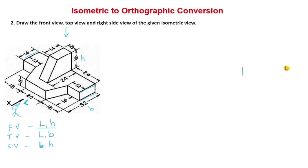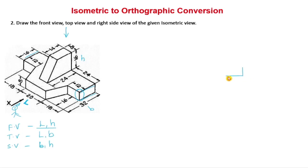If you observe this line which I have drawn, it corresponds to this particular line on the 3D figure. This is a vertical line. The distance here relates to the right side view — it is 12mm. From this particular point, that distance is again 12mm.